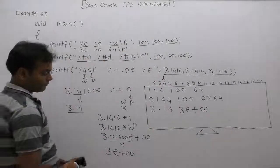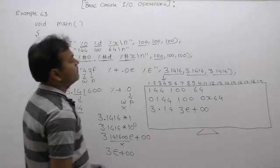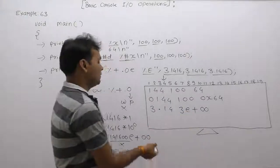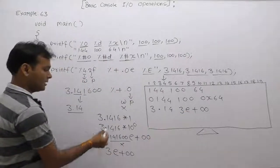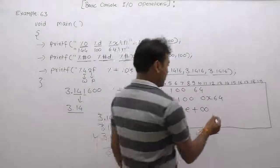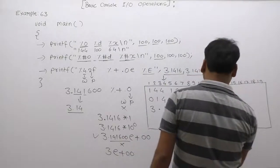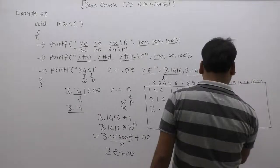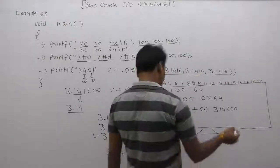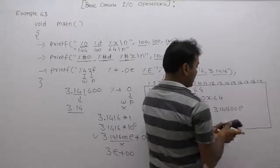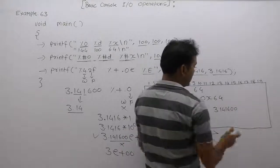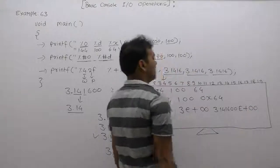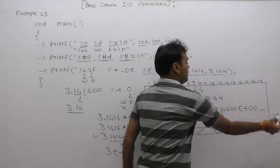Finally, the same value is displayed using %E, where E is in uppercase. With the default precision of 6, the output is 3.141600E+00. This is the final output of the given program.